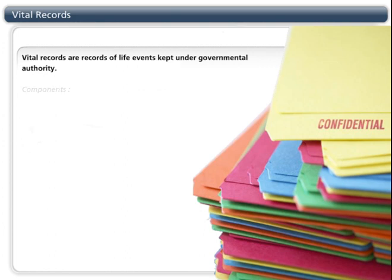Vital records are records of life events kept under governmental authority. They include records of deaths, births, fetal deaths, marriage, and divorce.